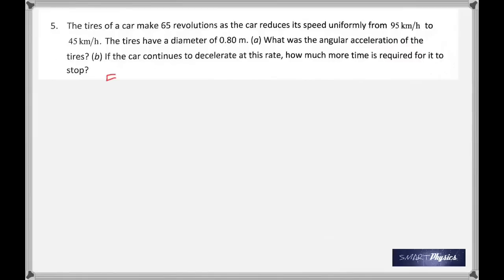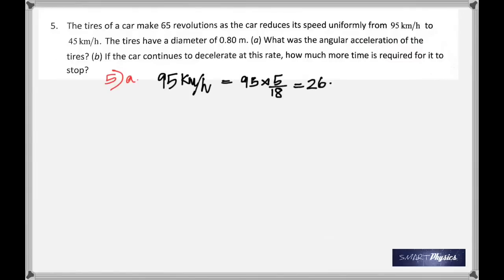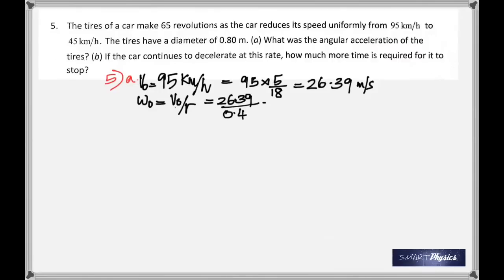To change 95 km/h to m/s, multiply by 5/18, giving 26.39 m/s. That is the initial linear speed, from which we get the initial angular speed: ω = v₀/r. Then change 45 km/h to m/s the same way.